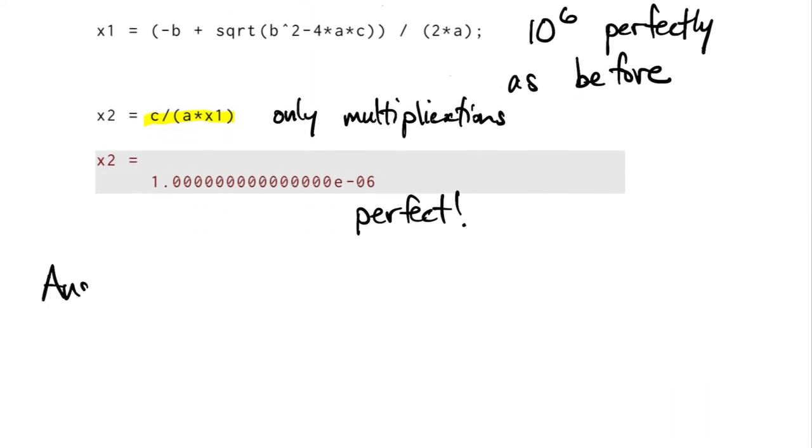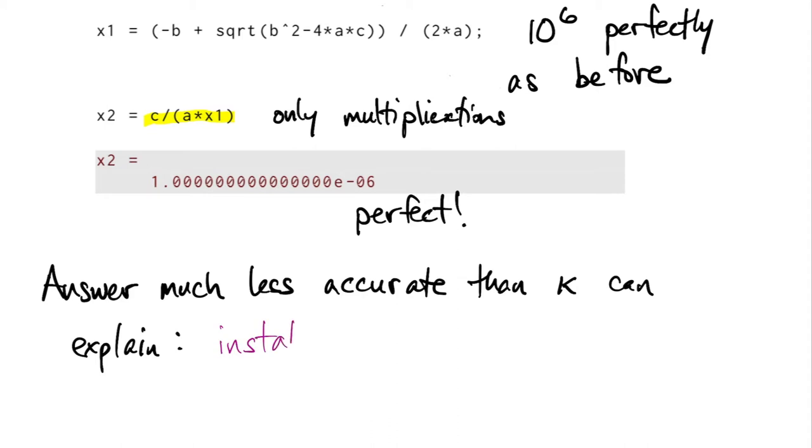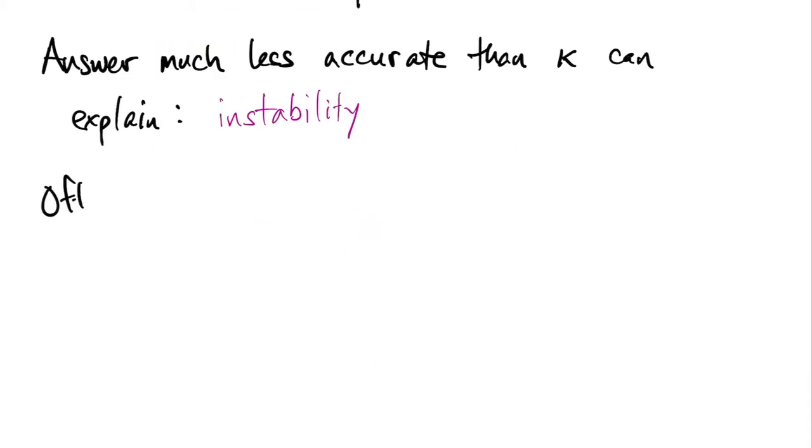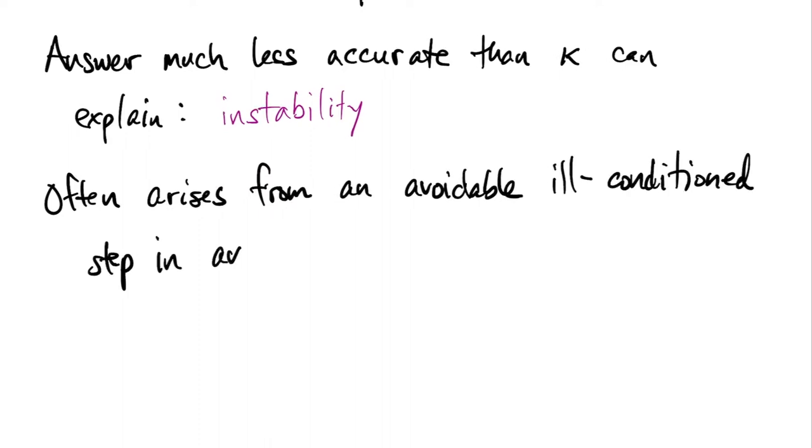A situation like this, in which we get an answer that's much less accurate than the condition number can explain, we call an unstable algorithm. Very often, instability arises from doing an avoidable, ill-conditioned step in the algorithm.